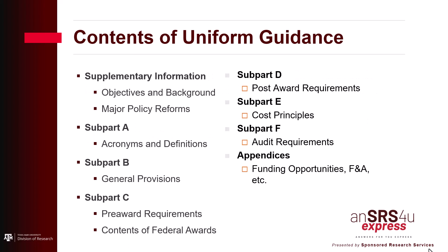Uniform Guidance is organized into various subparts. Subpart A contains acronyms and definitions and is especially useful in helping one understand grant terminology. Subpart B discusses general provisions. Subpart C covers administrative requirements directed primarily at federal agencies, including pre-award activities and requirements for the contents of federal awards.